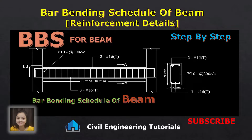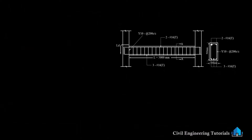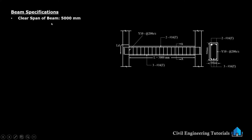In this video we will discuss BBS for beam, that is bar bending schedule of beam. First, beam specifications. Clear span of beam: 5000 millimeter, 5 meter. This is the beam, this is the section of beam — section on AA. Here to here, this is 5000 millimeter or 5 meter. This is the clear span or length.